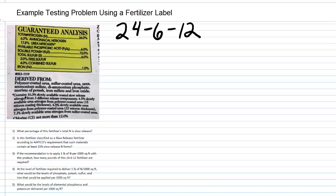When I come down to the asterisk, it says it contains 16.3% slowly available coated slow release nitrogen coming from three different sources. So let's write that down — this material is 16.3% slowly available nitrogen. That answers question one.